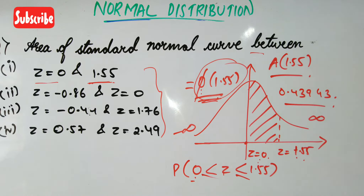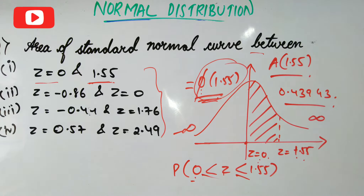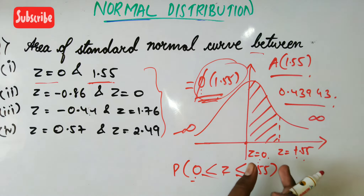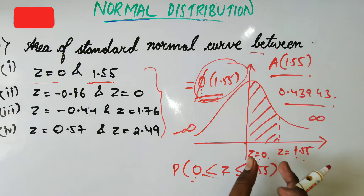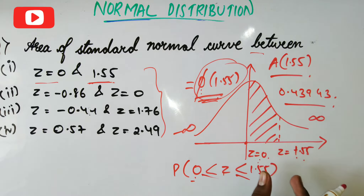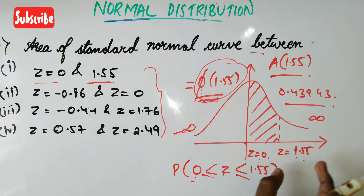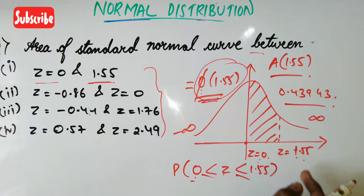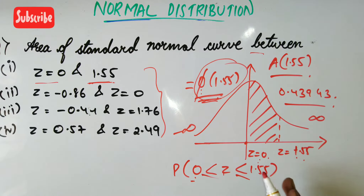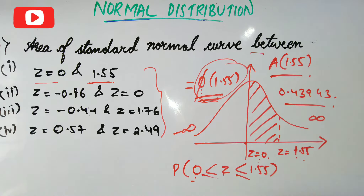The value I get is 0.43943. So this will be my answer for the area of the standard normal curve when z lies between 0 and 1.55.